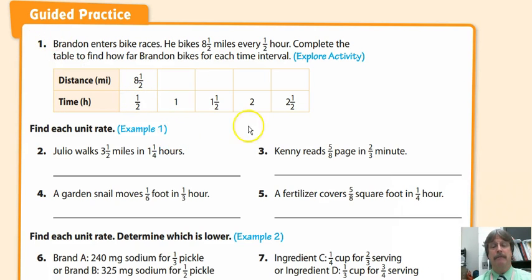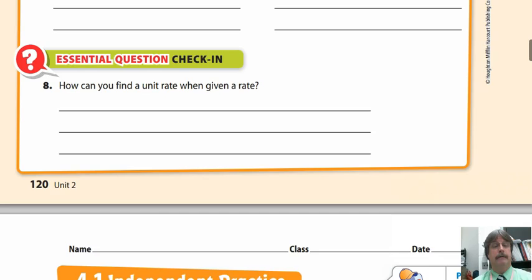We have various guided practice problems down here. Remember, you've got to do all the odd problems. Find the unit rate. Like number three, Kenny reads five-eighths pages in two-thirds minutes. Five-eighths divided by two-thirds.